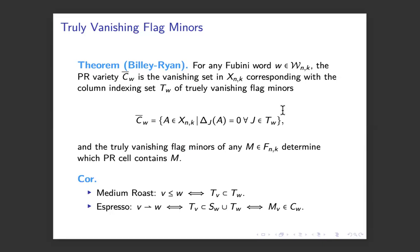So any of those that vanish on the whole cell, let's call those indexing them just by now the subsets of columns, because once you know the size of the column set, you also know which rows are going to be in there. So let's call those column sets T sub W. They'll index the truly vanishing flag minors.